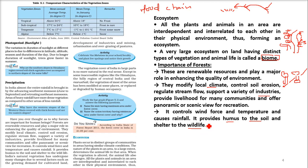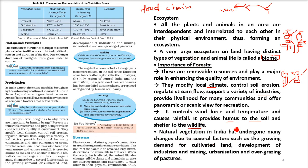Natural vegetation in India has undergone many changes because of growing population demanding more crops, cultivation of land, development of industries, mining, urbanization, and cutting trees and pastures. People also use pastures for raising animals for meat. This is how we are doing everything against nature.